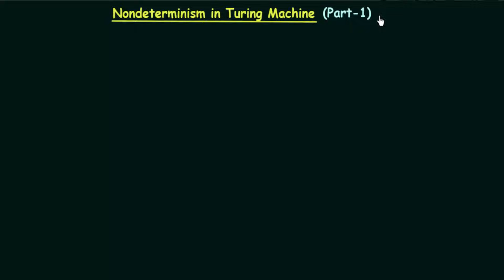So far we have been discussing about Turing Machines, and all the Turing Machines we have discussed so far were deterministic in nature. We already know the meaning of determinism and non-determinism, as we have seen these properties for other machines like finite state machines and pushdown automata. In this lecture, we will see non-determinism in Turing Machines and whether non-deterministic Turing Machines provide any additional power compared to deterministic Turing Machines.